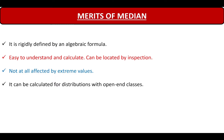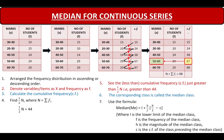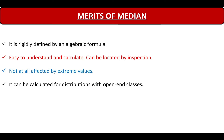Coming to the next point, median can be calculated for distributions with open-end classes. When we were calculating median for continuous series, we first calculate the value of n, which is the summation of all the frequencies, then we calculate half of n. From that value, we find the next immediate cumulative frequency, and from the cumulative frequency, we find the median class. Based on this median class, we calculate the median. The open-ended classes were nowhere in the picture — they did not affect the calculation in any way. So median can be calculated for distributions with open-end classes, which is a very important principle.